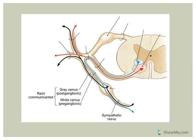In the section through the spinal cord, the light blue represents a lateral gray horn. That's only located in spinal cord segments T1 all the way to L2.